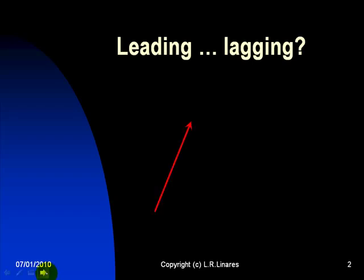This is a red phasor that represents either a voltage or a current, a sinusoidal voltage or a sinusoidal current. And this yellow phasor represents some other voltage or some other current, sinusoidal as well, of the same frequency.